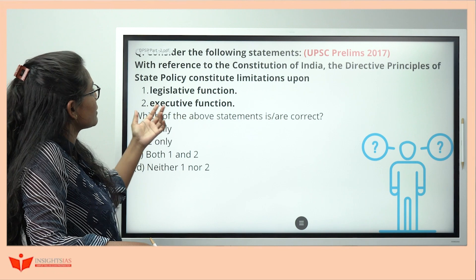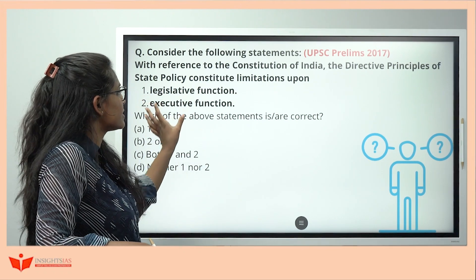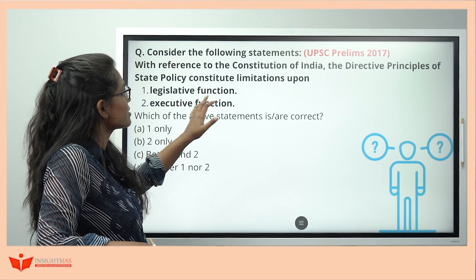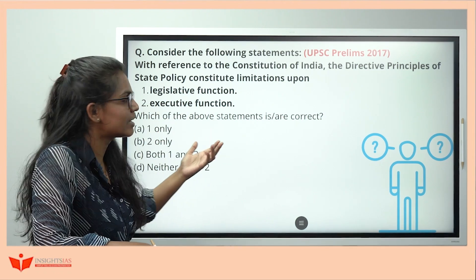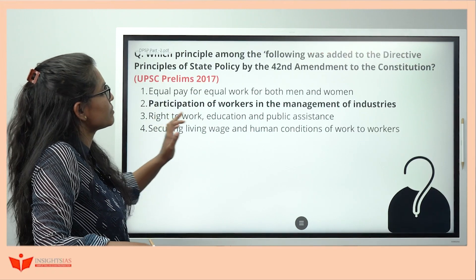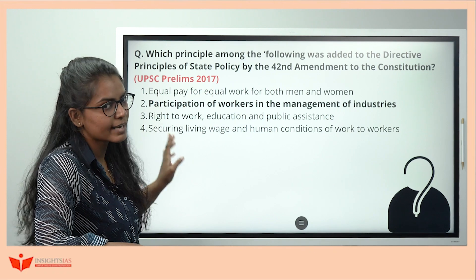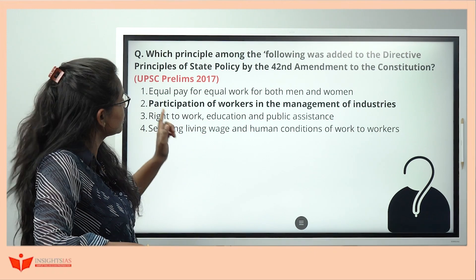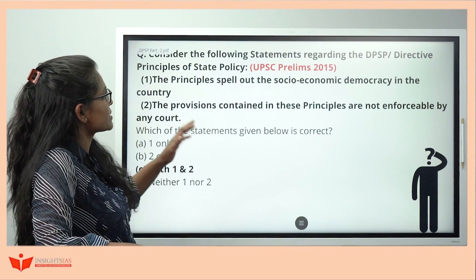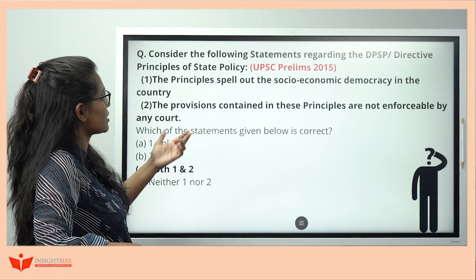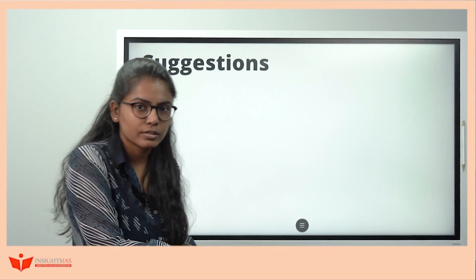Q4 (2017): 'DPSP constitute limitations upon legislative and executive' — the answer is neither, because DPSPs are non-justiciable; even if legislature and executive don't comply, no one can go to court. Q5: 'Which principle was added to DPSP by the 42nd Constitutional Amendment?' — Article 43A, participation of workers (note: 43B — cooperatives — was added separately). Q6: 'The provisions in DPSP spell out socio-economic democracy and are not enforceable by any court' — both statements are correct.